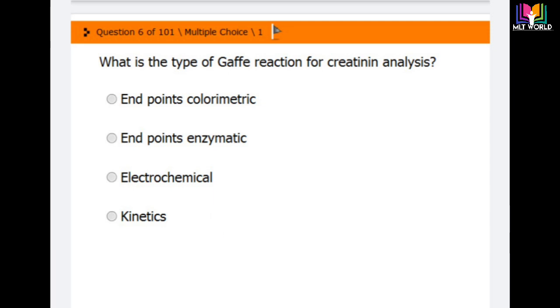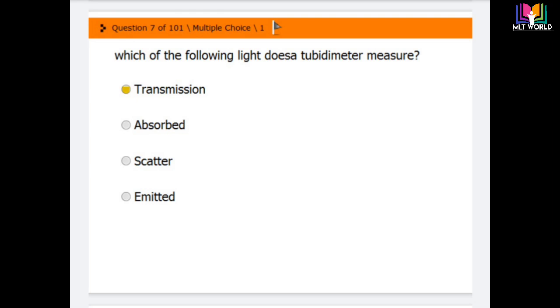Question number seven: Which of the following light does turbidometric measure? Options are transmission, absorbed, scattered, and emitted. The answer is transmission.